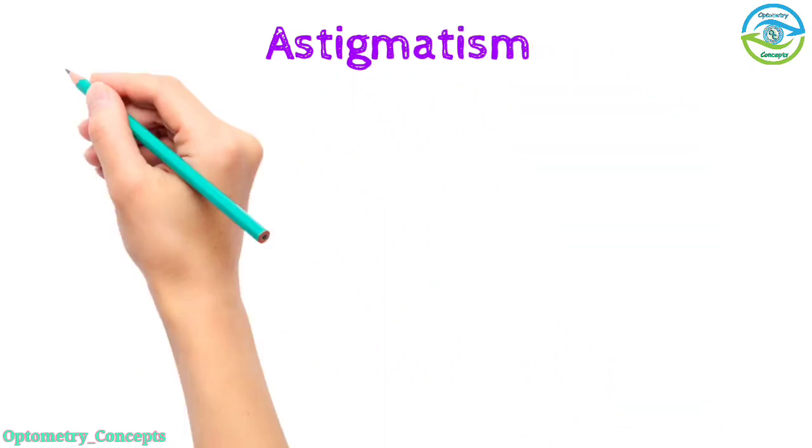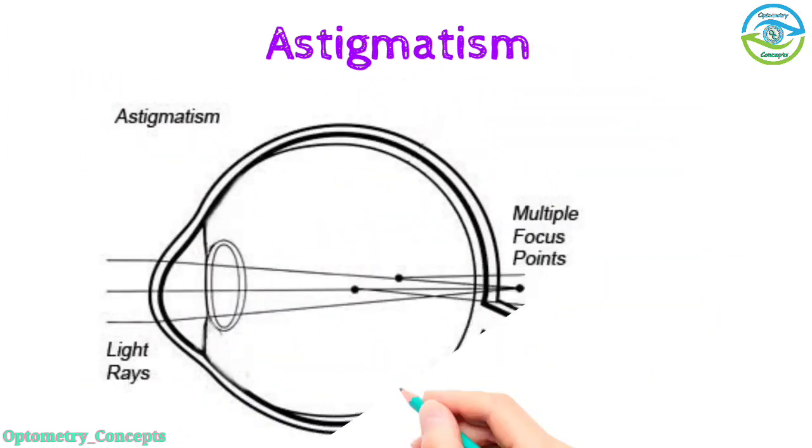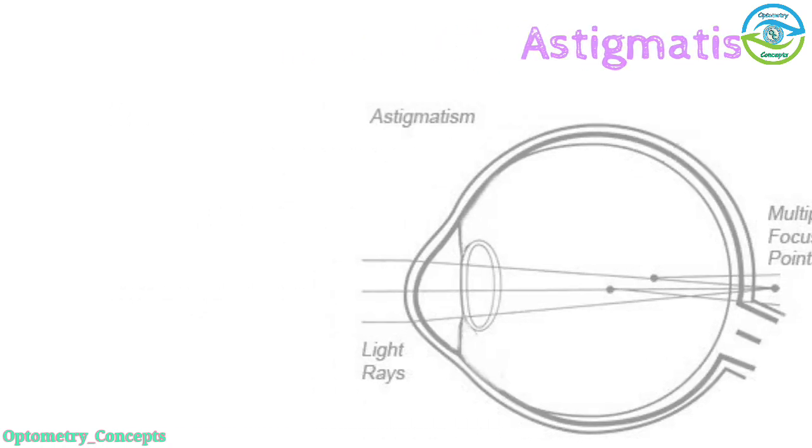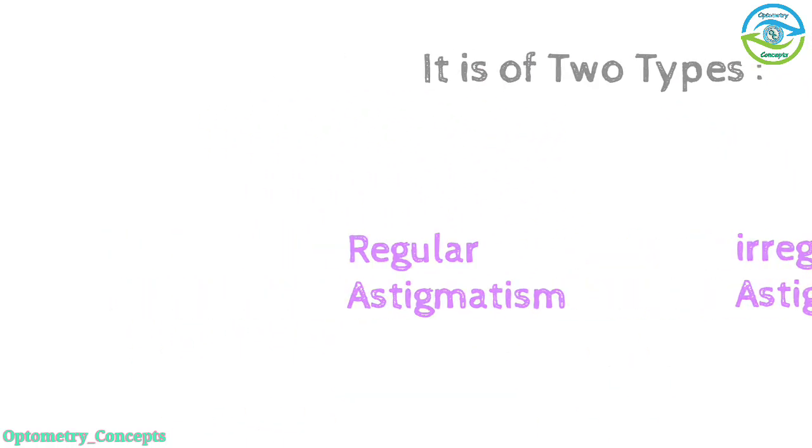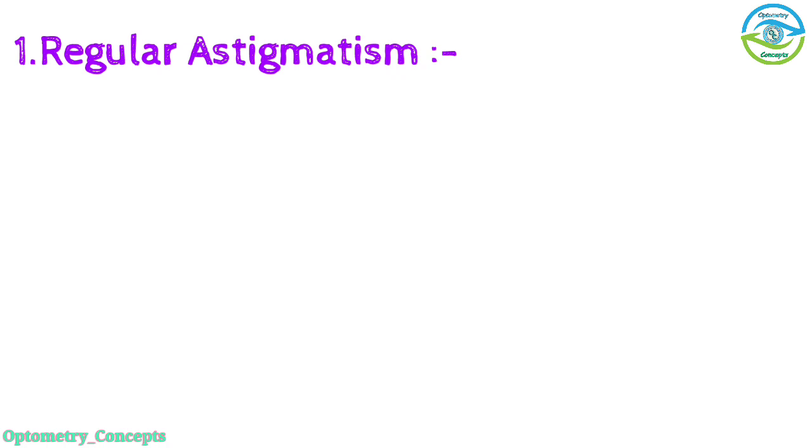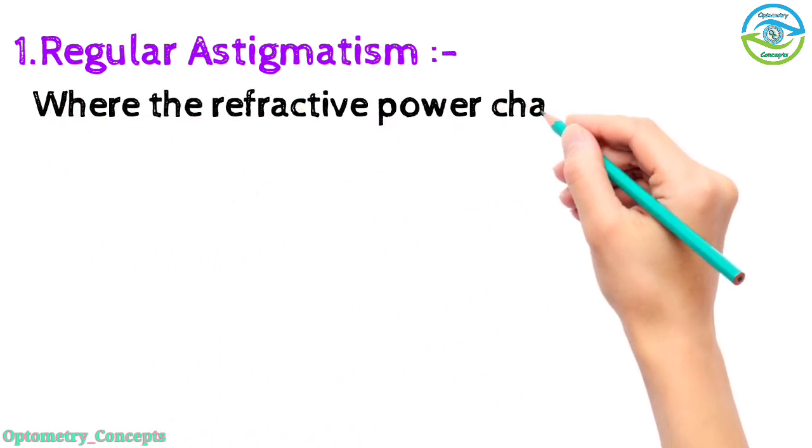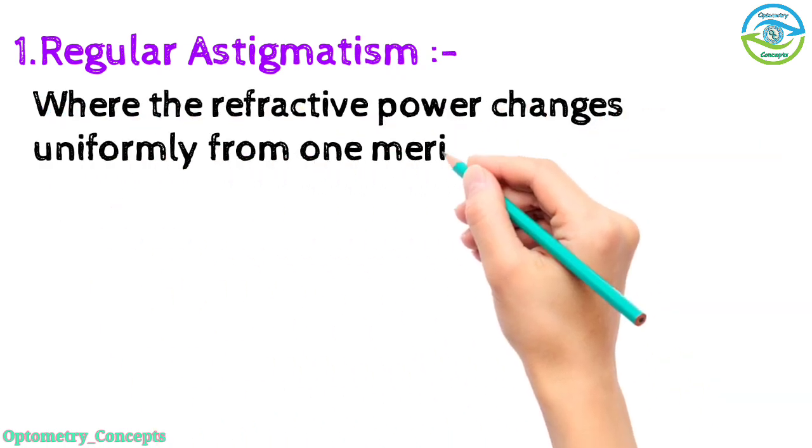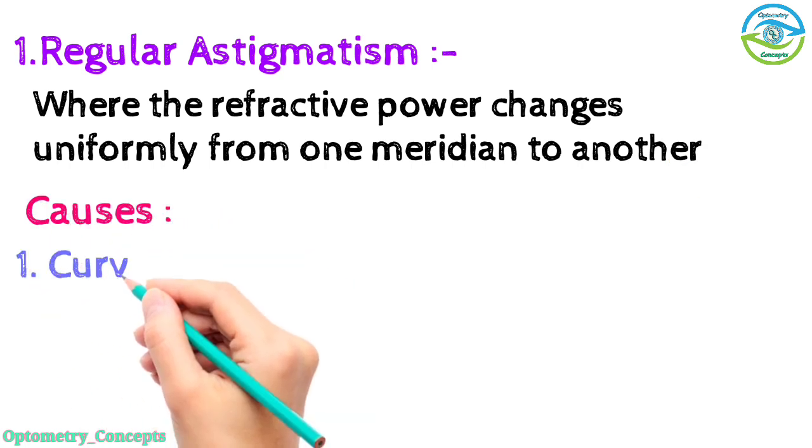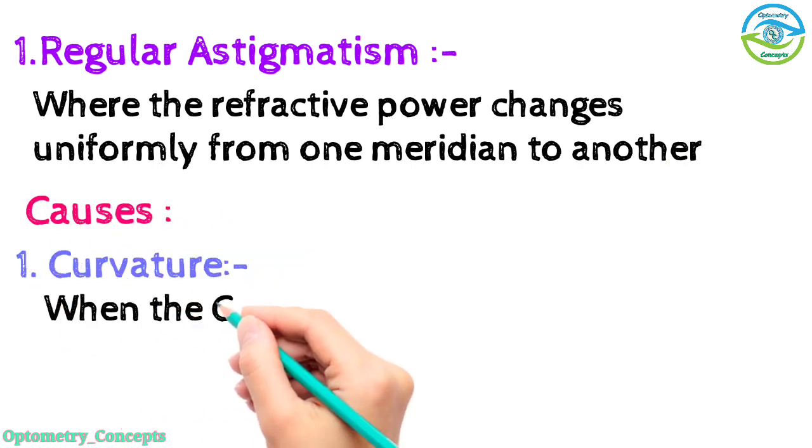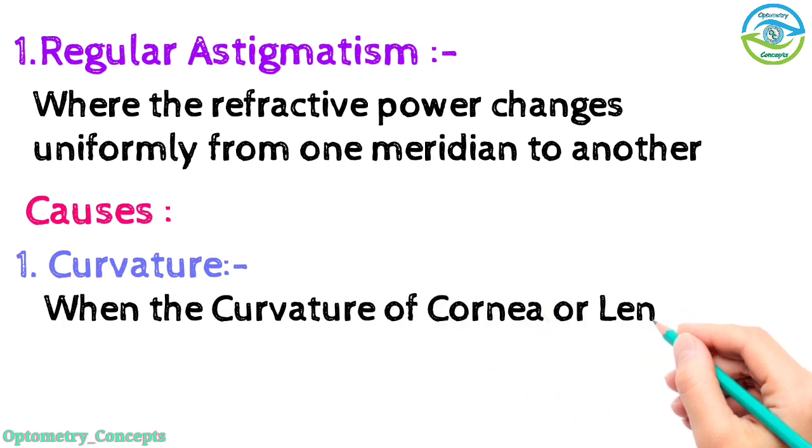Astigmatism is a refractive error where light converges at two different points and eventually forms focal lines. It is of two types: regular and irregular astigmatism. Regular astigmatism is where the refractive power changes uniformly from one meridian to another. Causes: curvature - when the curvature of cornea or lens is abnormal.